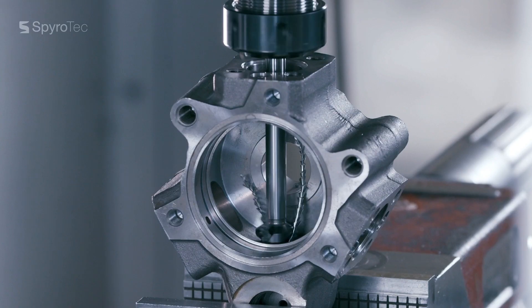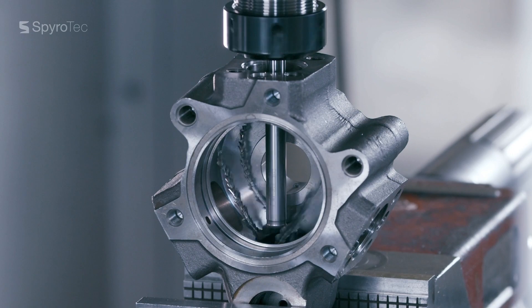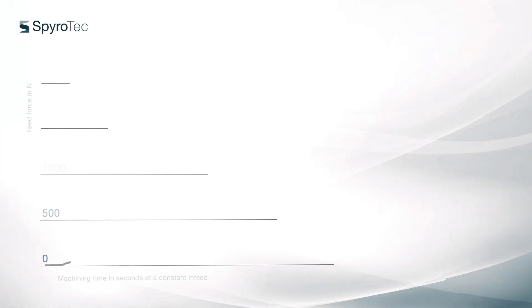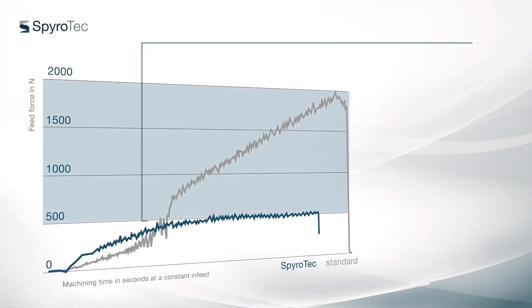Its unique geometry enables the Spirotech to pull itself into the component. Due to this corkscrew effect, it requires only very low feed forces.